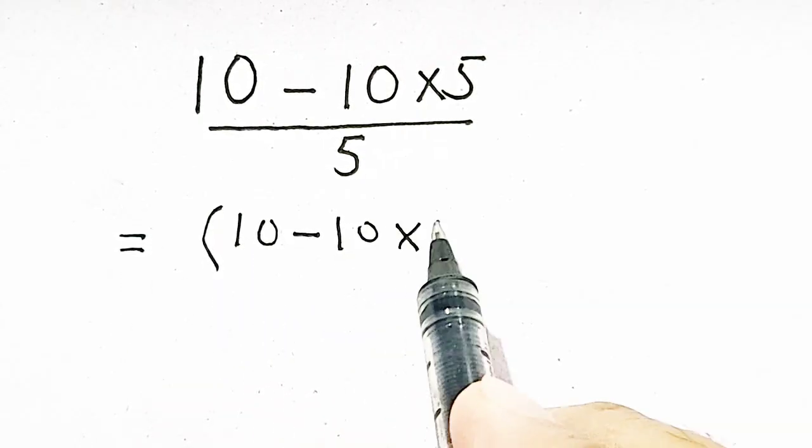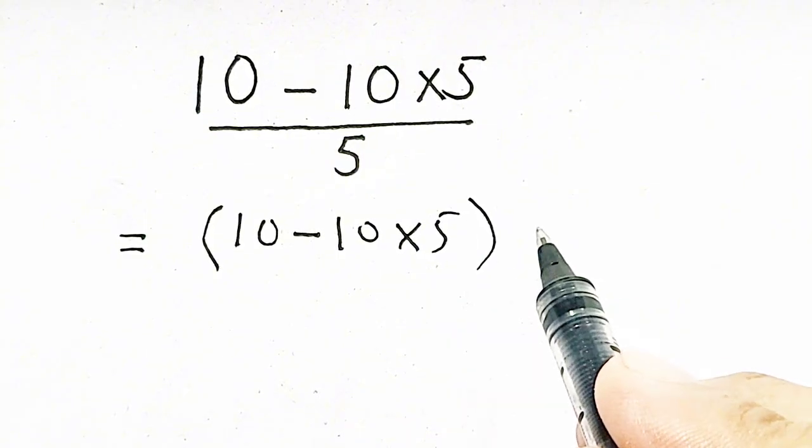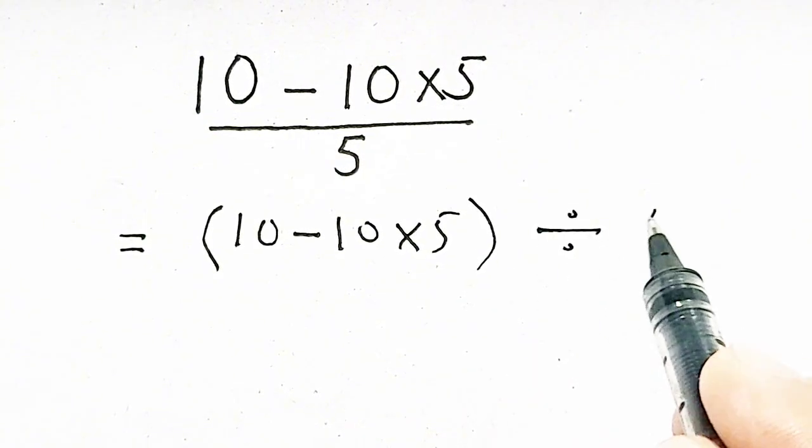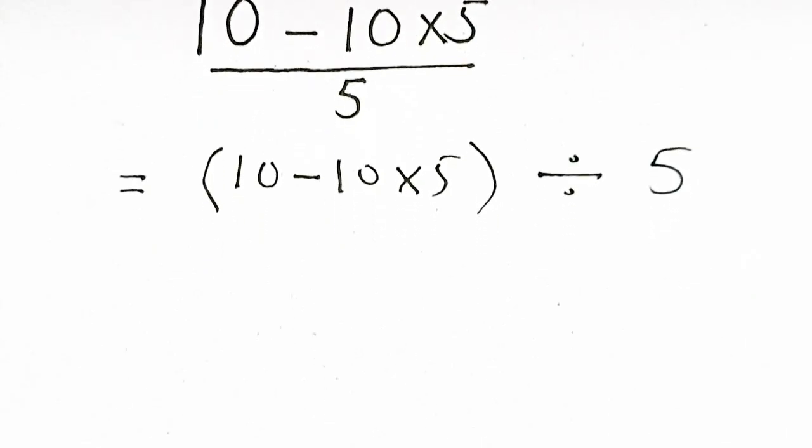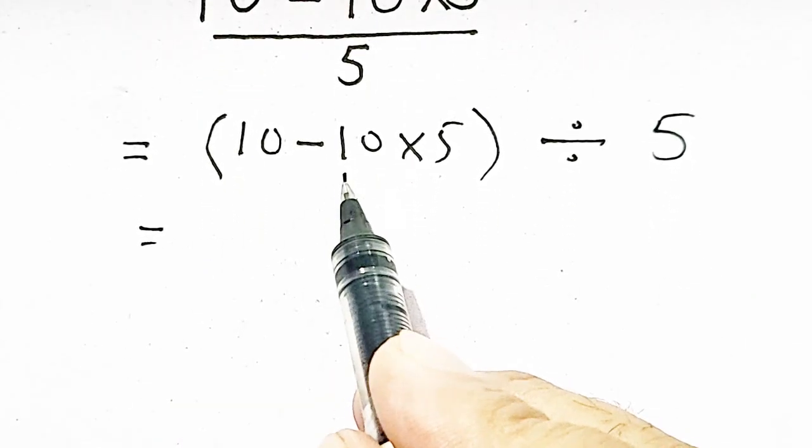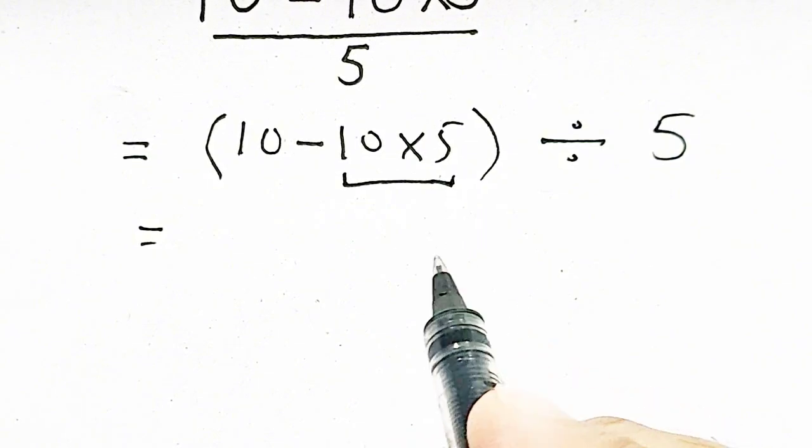10 minus 10 times 5 is written in first parenthesis, divided by 5. You can write 5 in second parenthesis. Now, this one should be solved first.